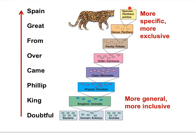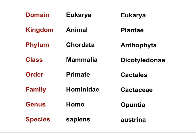The leopard, Panthera pardus, is derived from the Eukarya domain, the Animal Kingdom, phylum Chordata, class Mammalia, order Carnivora, family Felidae, genus Panthera — Panthera pardus in binomial nomenclature. Here are two species, an animal and a plant, classified from domain to species. The species on the left should be familiar to you — study this slide on your own.